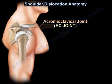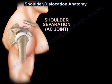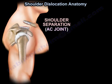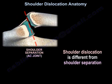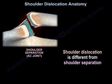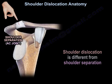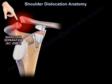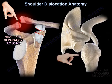The acromioclavicular joint is called the AC joint. When it is injured, they call it shoulder separation. Shoulder dislocation is different than shoulder separation. Here you can see the shoulder separation on the left and the shoulder dislocation on the right.